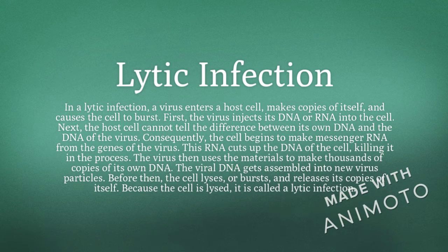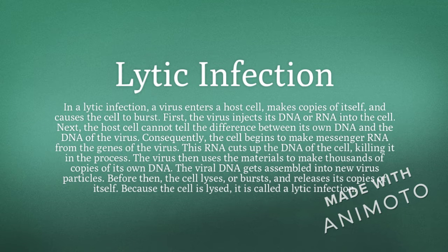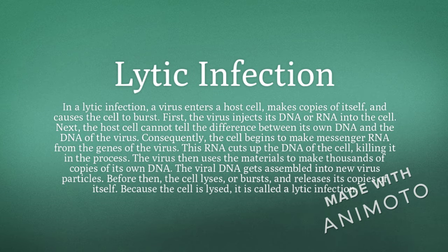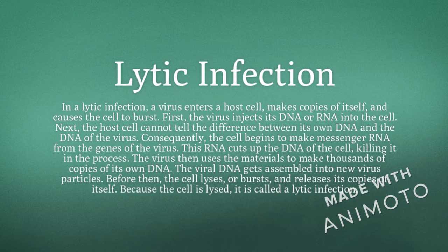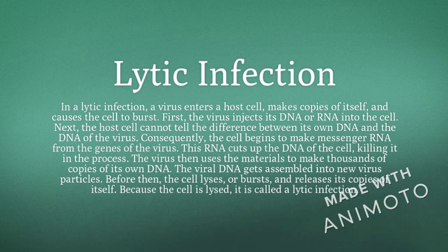Lytic infection. In a lytic infection, a virus enters a host cell, makes copies of itself, and causes the host cell to burst. First, the virus injects its DNA or RNA into the cell. Next, the cell cannot tell the difference between its own DNA and the DNA of the virus. Consequently, the cell begins to make messenger RNA from the genes of the virus. This RNA cuts up the DNA of the cell, killing it in the process.